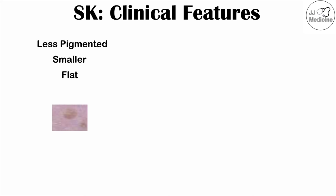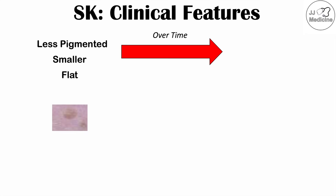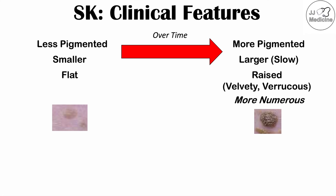These lesions change over time. They often start out as less pigmented, smaller, and flat — they may begin as a macule (a flat lesion less than 10 millimeters) or a patch (flat and greater than 10 millimeters). Over time they become more pigmented, slowly larger, and more raised. They can also become velvety and verrucous, resembling a wart in some cases, and they become more numerous.